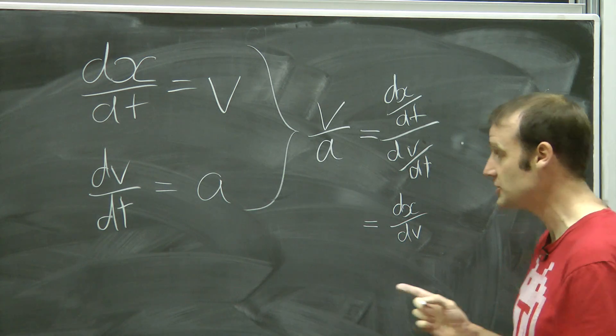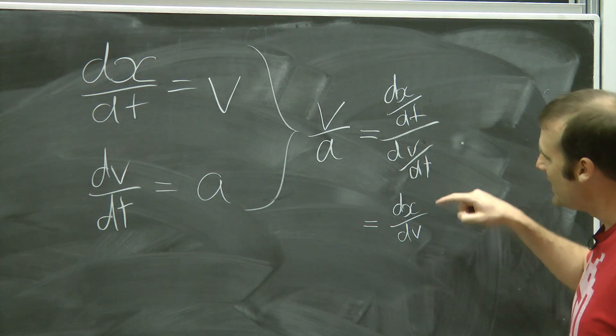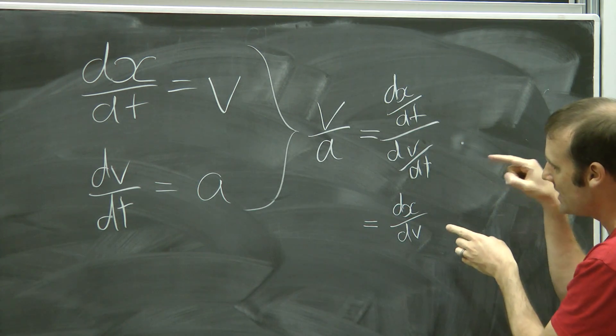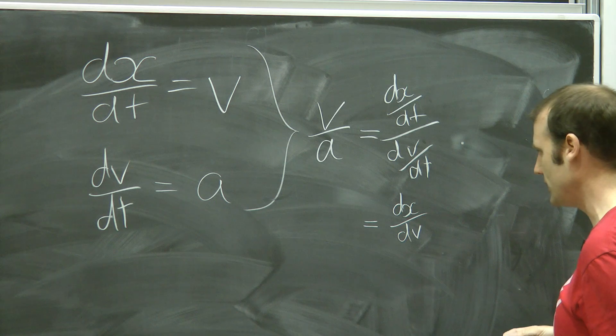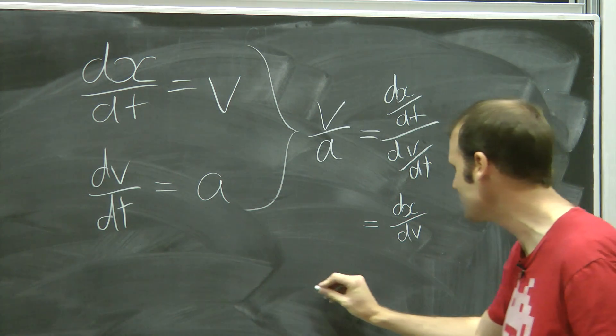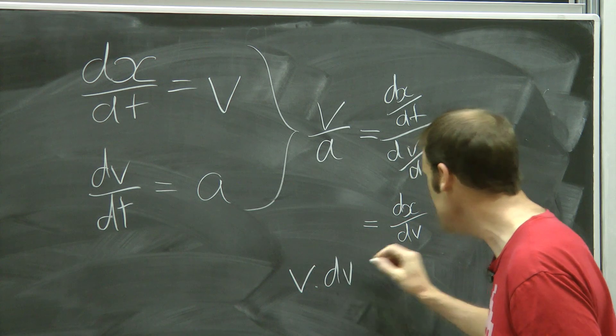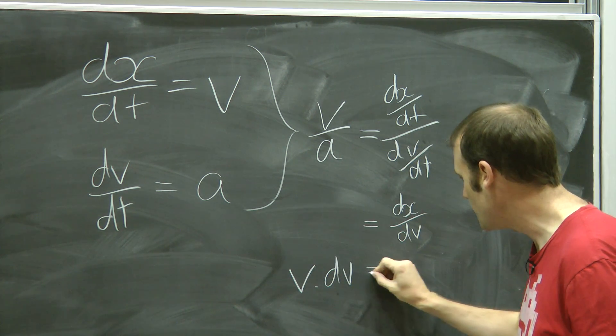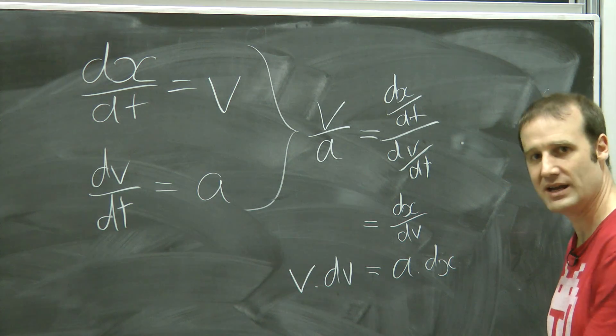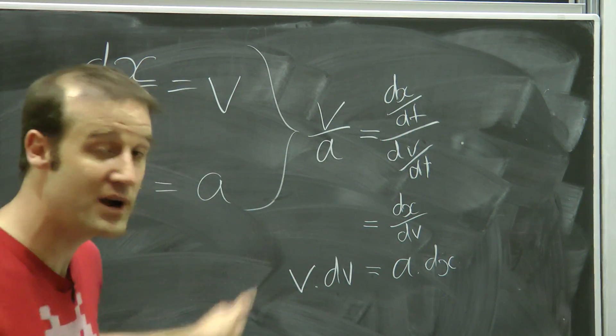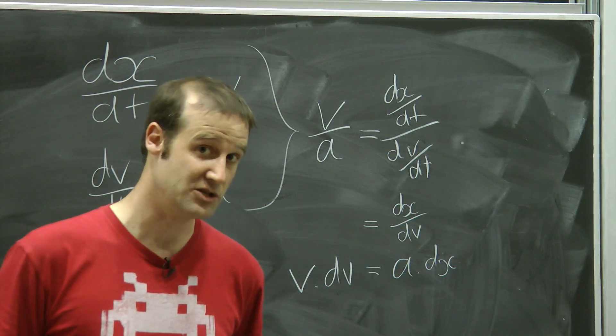Now this is quite an interesting relationship. It means that v divided by a, velocity divided by acceleration, is the same ratio as dx dv. And if we want to rearrange that slightly, it means that the velocity times dv, if I bring that over, equals the acceleration times dx, if I bring that over. And this is particularly useful for us because our acceleration is in terms of position.